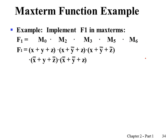Now for maxterms. If function f1 is expressed as a product of maxterms form, then we can find the original Boolean expression by replacing each maxterm by its expression. So maxterm index zero with three variables is x, y, z all in true form, because in a binary pattern true form represents a bit zero in a maxterm. Maxterm index two means a zero-one-zero pattern, and maxterm index three is this.